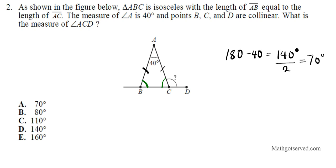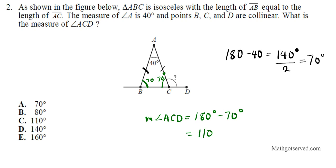That means this angle is 70 and this angle is 70. Since angle ACB and angle ACD form a linear pair, they add up to 180 degrees. So the measure of angle ACD is 180 degrees minus 70 degrees, which is 110 degrees. The answer to number 2 is option letter C.